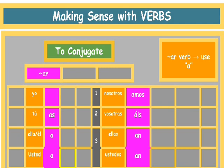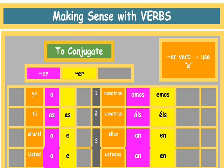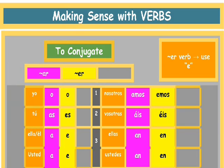So it makes sense that for ER verbs, you would add an E instead of an A. So instead of AS, you would add ES. And instead of AIS, you would add EIS. And don't forget for the yo form, you would always add an O — it's always an O or OY.